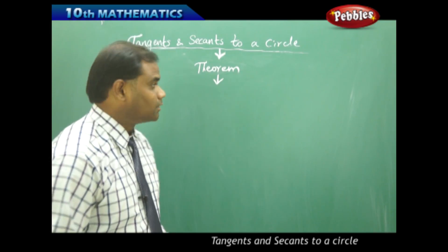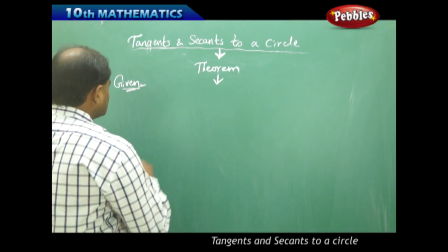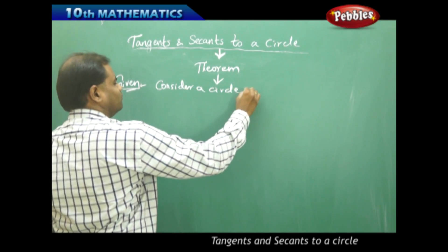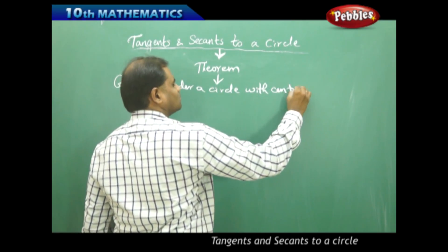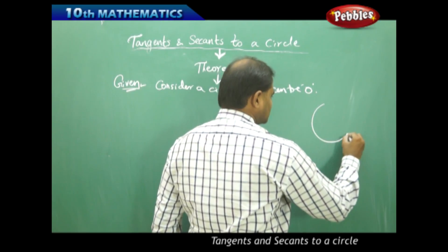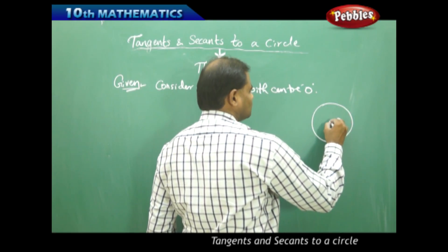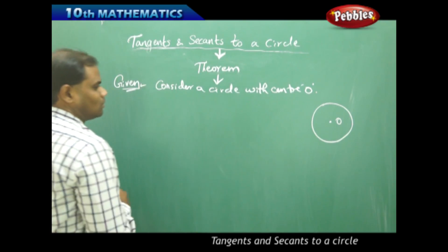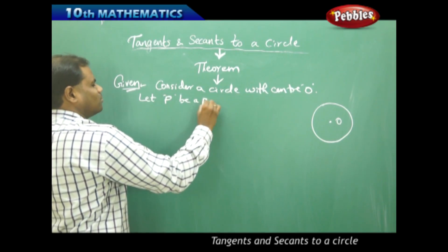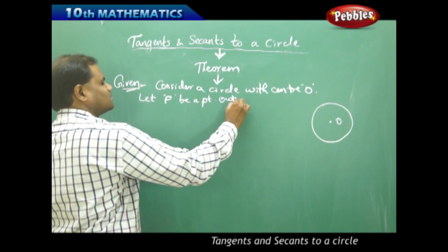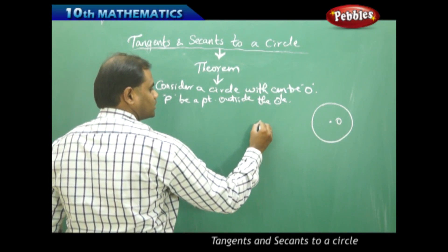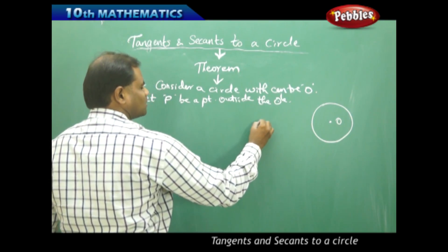Let's begin with the given part of the theorem. We consider a circle with center O. Let P be a point outside the circle.